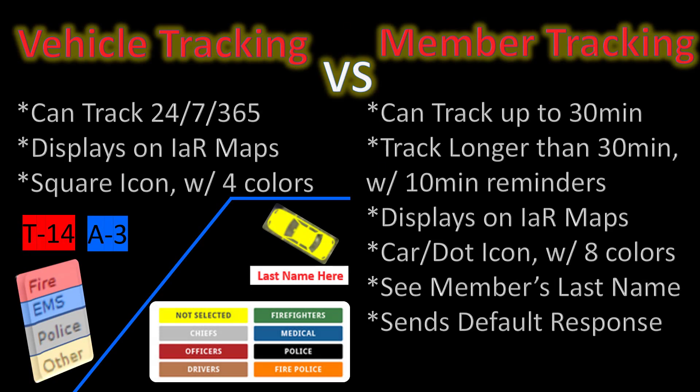To use either of I Am Responding's tracking options, you're going to need an Android or iOS mobile device. The big difference between vehicle tracking and member tracking is the length of time that you can be tracked, the icons themselves, and the color options.